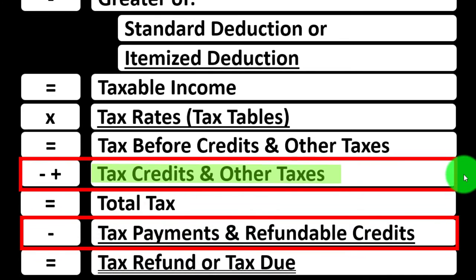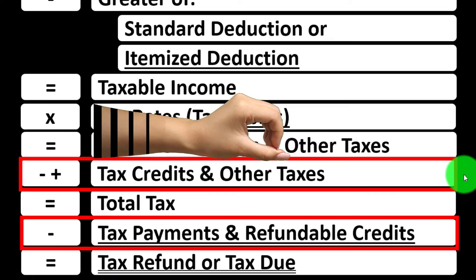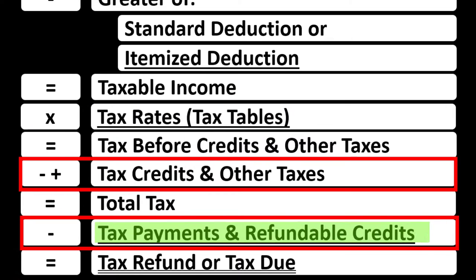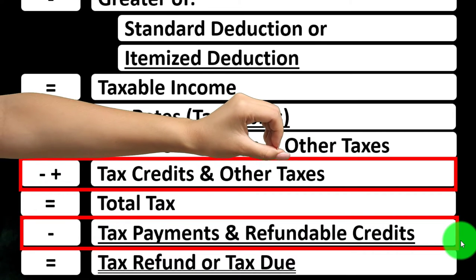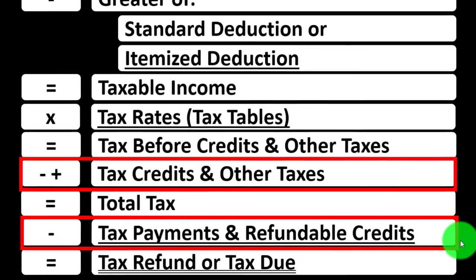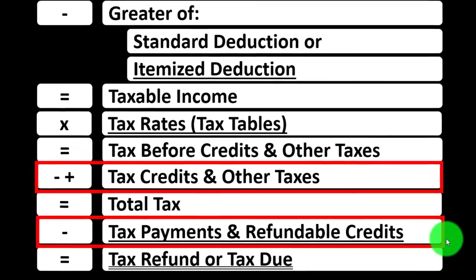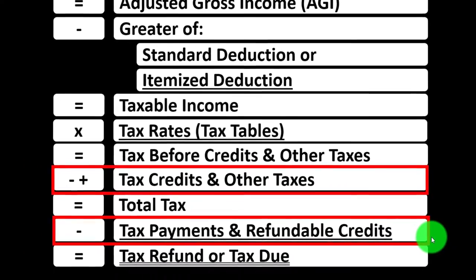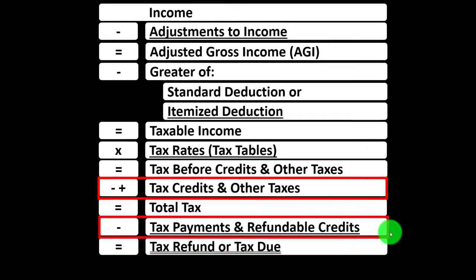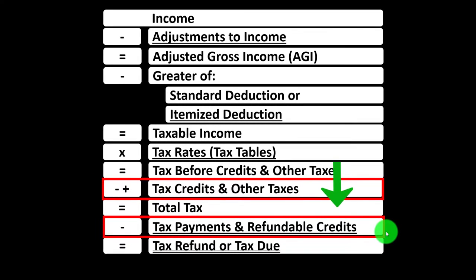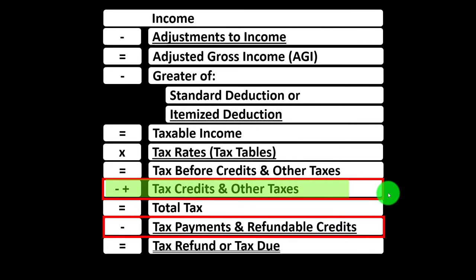The non-refundable credits won't bring the tax liability below zero. The refundable credits could possibly bring the tax liability below zero — at that point, not really having a refund, although it might still be called a refund, but rather you'd have kind of like a benefit program at that point in time. Some credits might have a non-refundable and refundable portion to them.